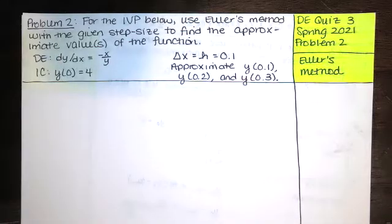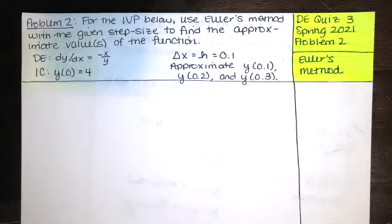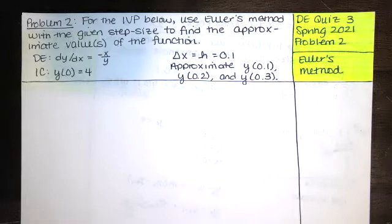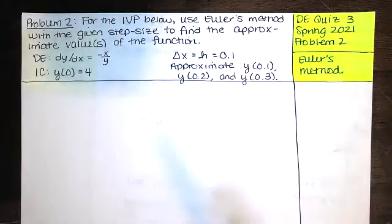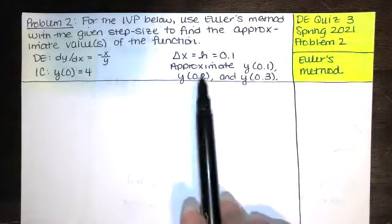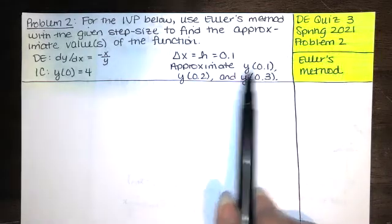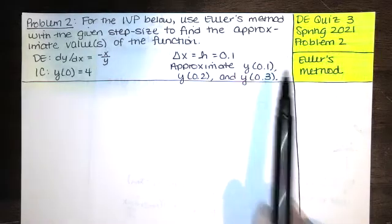The problem statement says: for the IVP given below, use Euler's method with the given step size to find the approximate values of the function. We have dy/dx equals negative x over y, with initial condition y(0) = 4, and delta x (h) equals 0.1. We're asked to approximate y(0.1), y(0.2), and y(0.3).